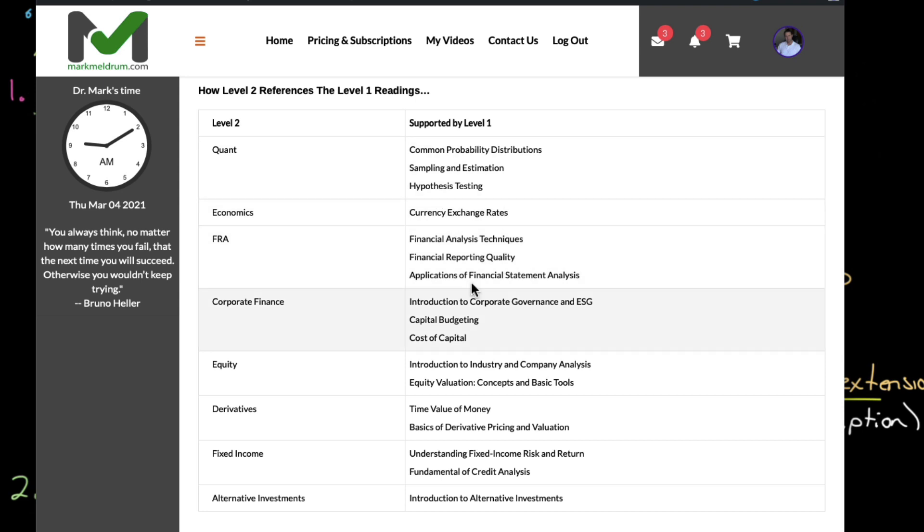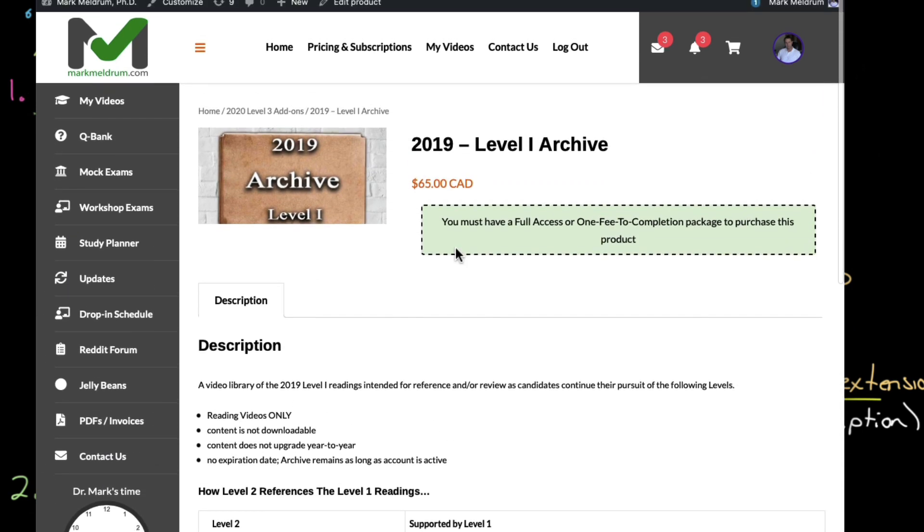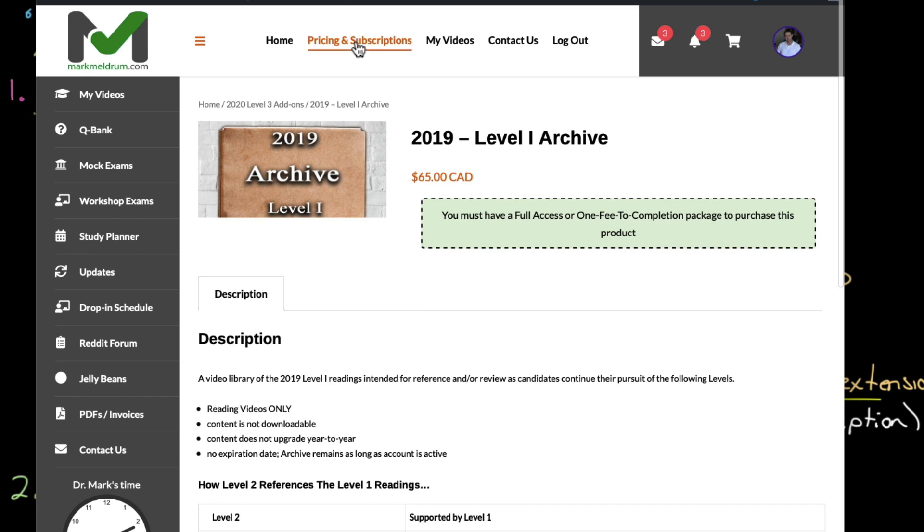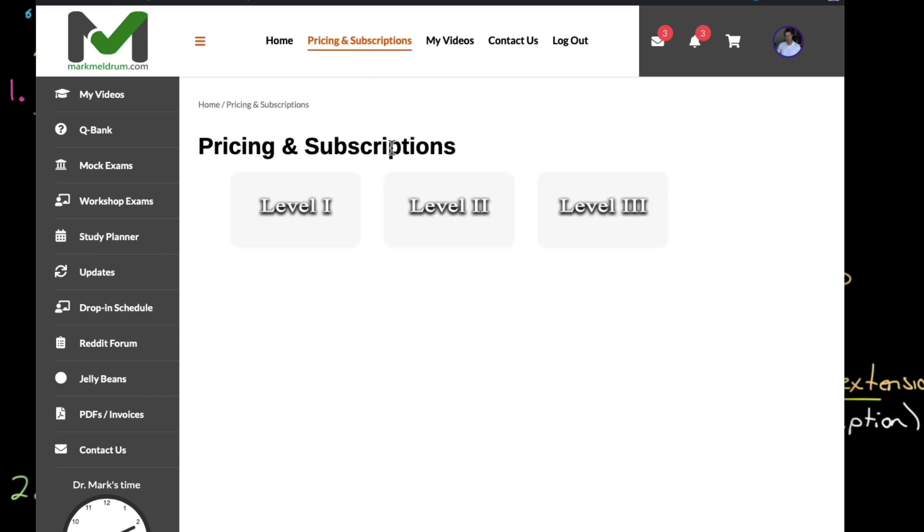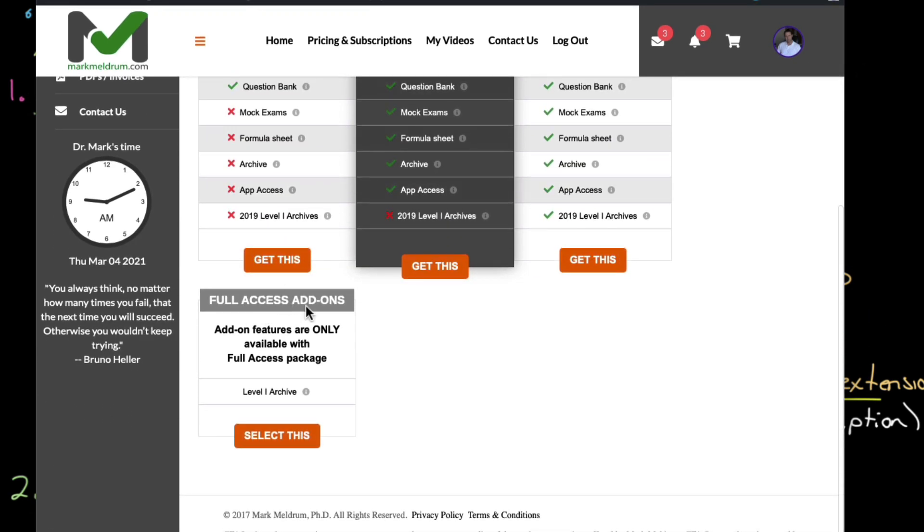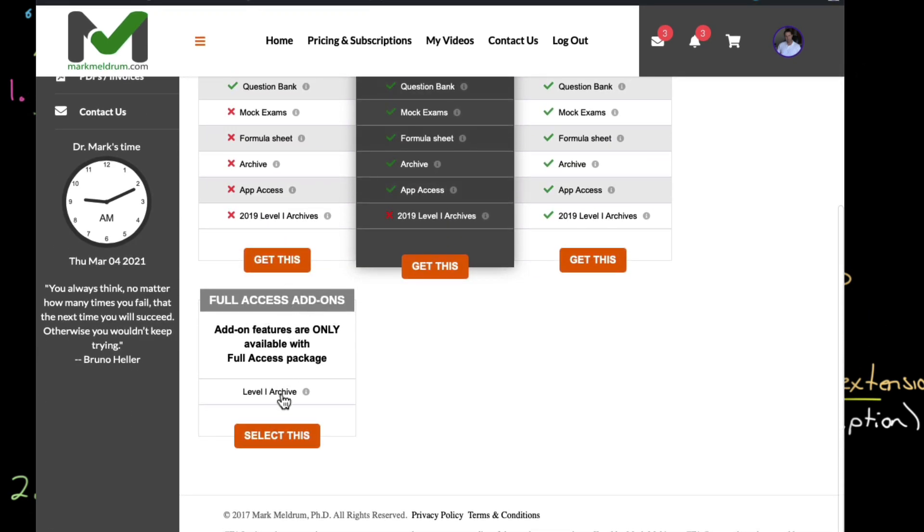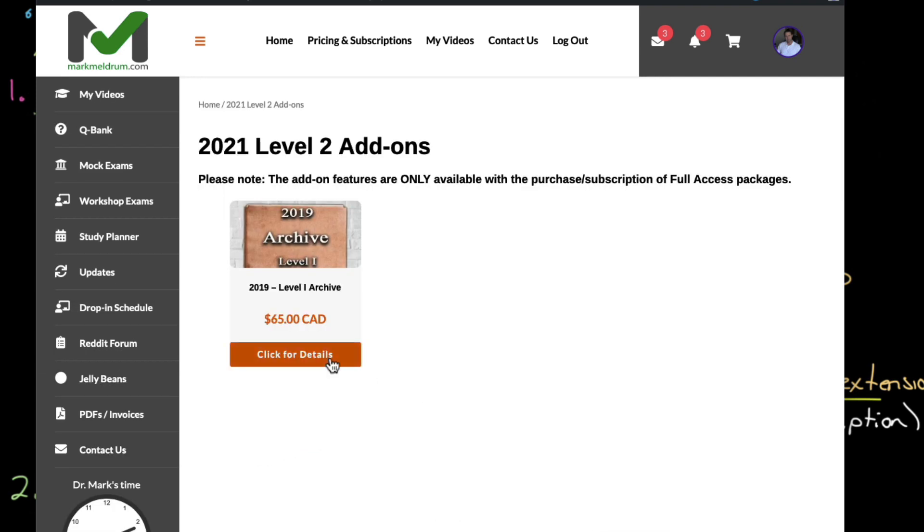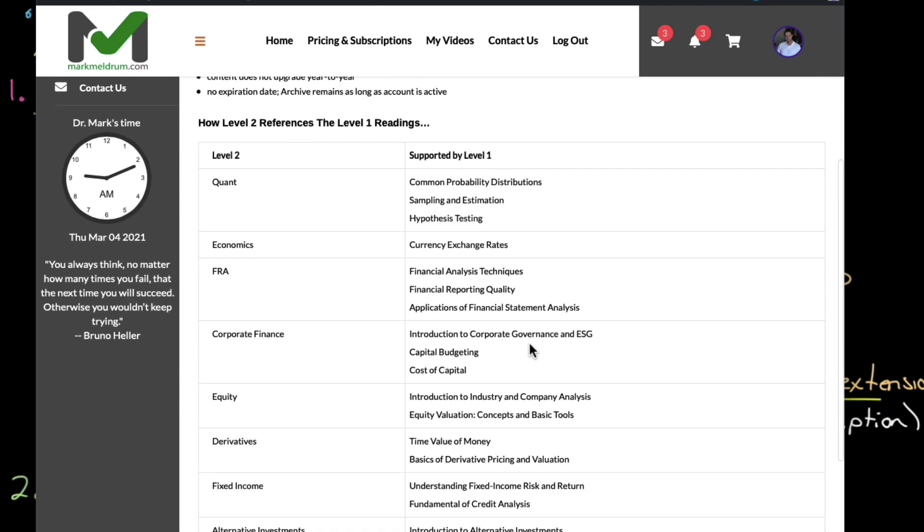If you want to know how to get to this chart on our site, simply click on, at the very top, click on Pricing and Subscriptions, click on Level 2, and scroll down to the Full Access Add-ons. You can add a Level 1 archive. If you buy a Level 2 subscription on our site and you don't have the Level 1 archive already, you can add it. If we select this and click for Details, you should see everything right there. That's how you get to that particular chart.